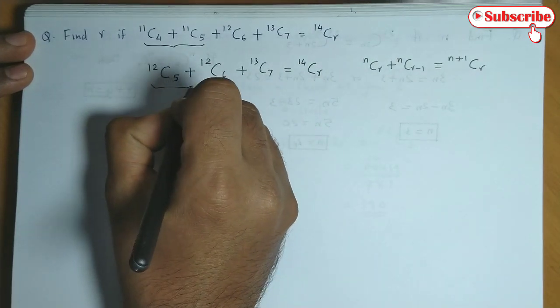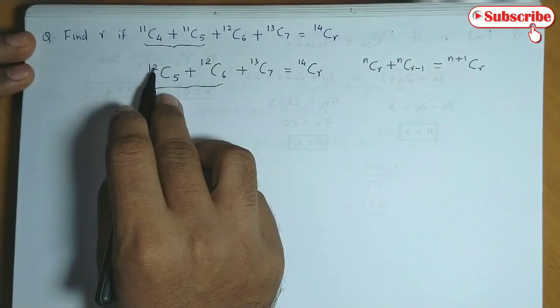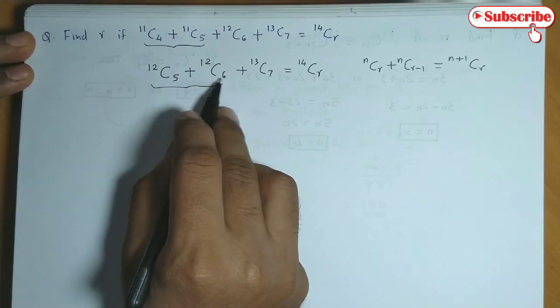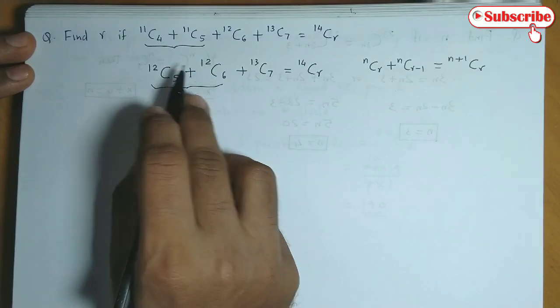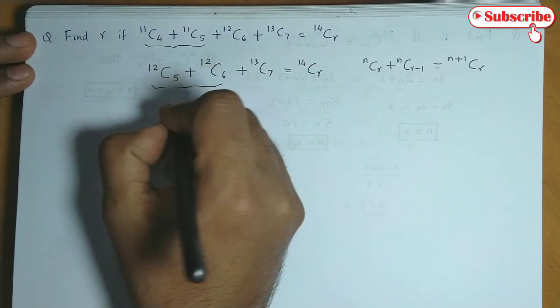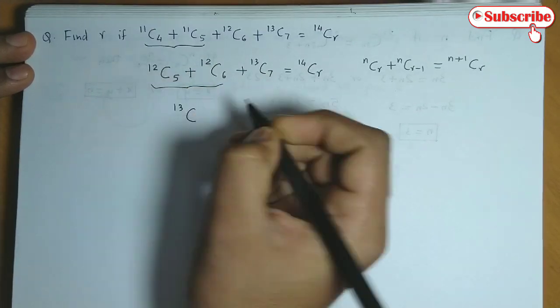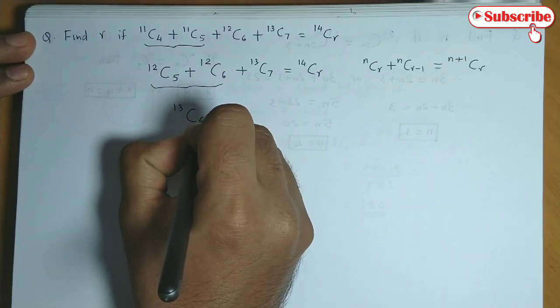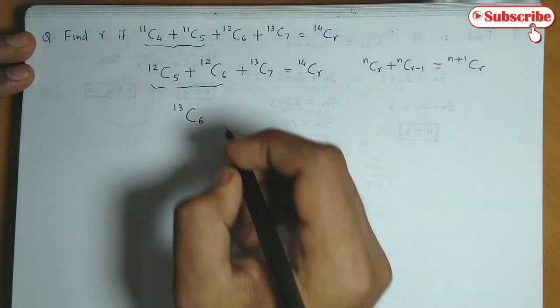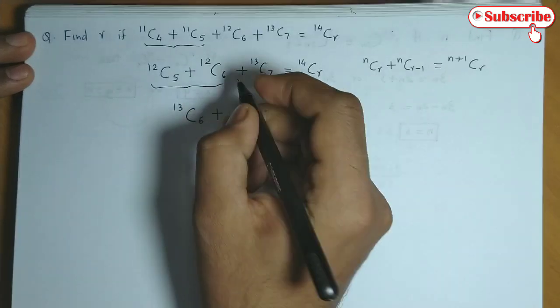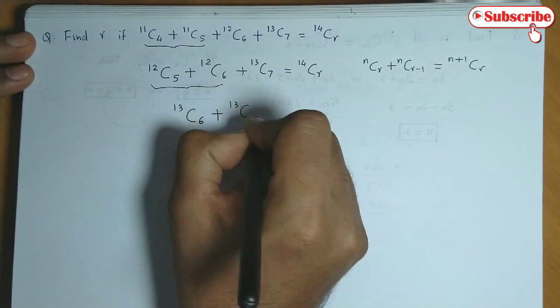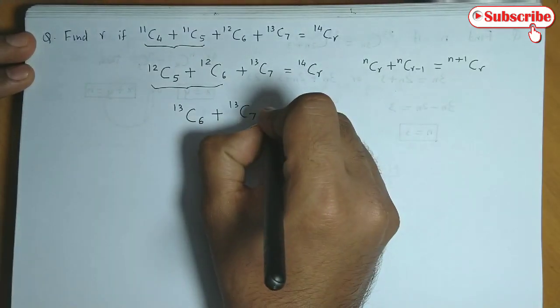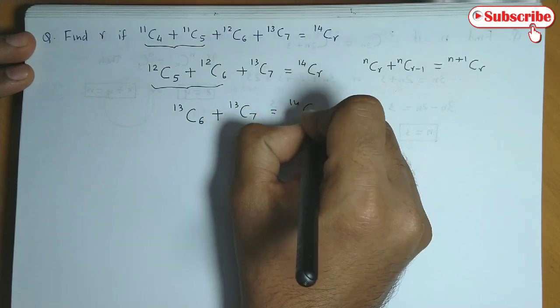Now again we can combine these two combinations. N is the same and R has a difference of 1. So N becomes N plus 1. So 12 becomes 13, and 6 is greater than 5. So we write down the greater value, that is 6 plus, next comes 13C7 is equal to 14CR.